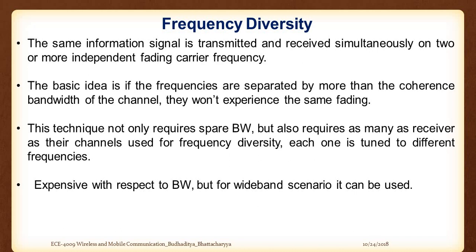Imagine a scenario where instead of two spaced antennas, you send the same data using two different frequency bands f1 and f2, where the bandwidth is greater than the coherence bandwidth of the channel. Due to frequency selectivity, for f1 and f2 two different sets of fading occur. Now this f1 fading will be uncorrelated to f2 fading. At the receiver we detect which fading is poorer and neglect that one, taking the better one. That is the basic idea behind frequency diversity.